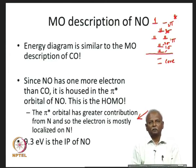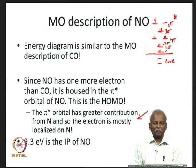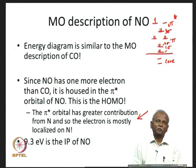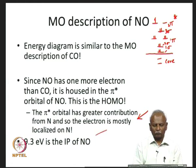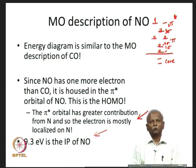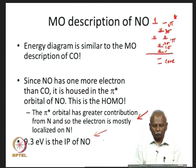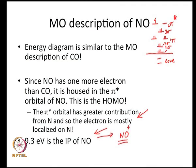This electron which is on the pi* orbital can be readily removed. The ionization potential of NO is about 9.3 electron volts, so it is readily removed and gives you NO plus. This ionization results in the formation of NO plus, which is the molecule of interest, because now NO plus is isoelectronic to carbon monoxide.